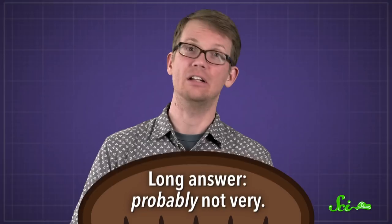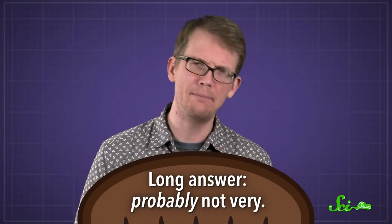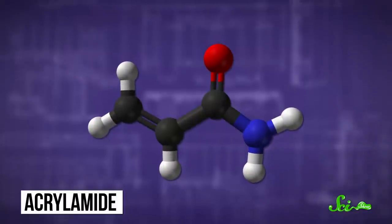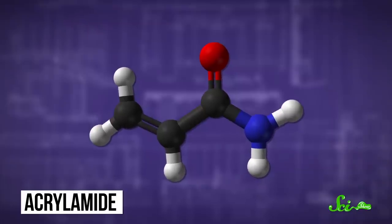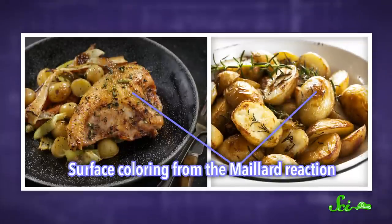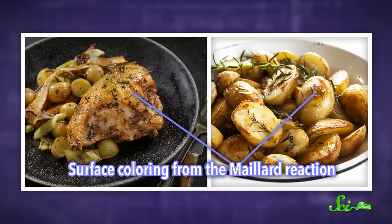Well short answer, not very. Long answer, probably not very. When starchy foods like bread or potatoes are heated to high enough temperatures, like by baking or frying, a chemical reaction takes place that produces a compound called acrylamide. In many cases, the reaction is similar to but distinct from the Maillard reaction between amino acids and sugars, which also causes food to brown during cooking.